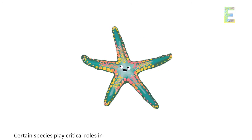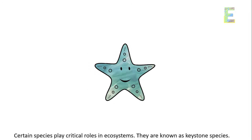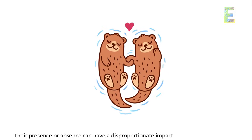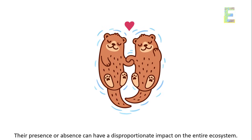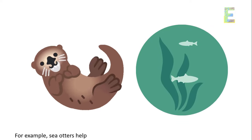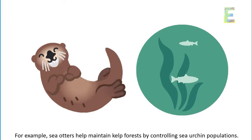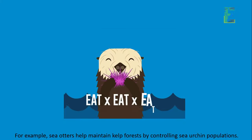Keystone species: certain species play critical roles in ecosystems and are known as keystone species. Their presence or absence can have a disproportionate impact on the entire ecosystem. For example, sea otters help maintain kelp forests by controlling sea urchin populations.